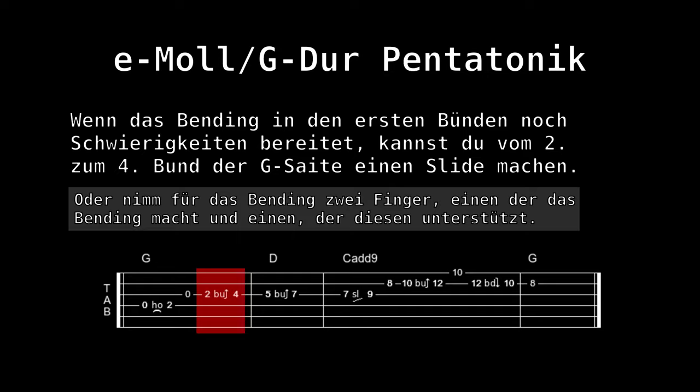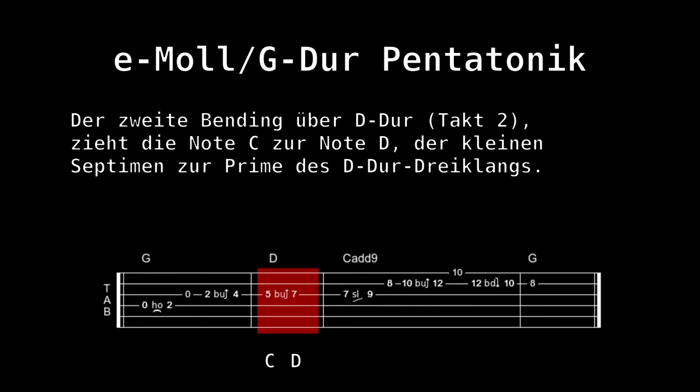Wenn das Bending noch Schwierigkeiten bereitet, kann der Tonschritt vom zweiten zum vierten Bund mit einem Slide gemacht werden. Der zweite Bending über den D-Dur Dreiklang im Takt 2 zieht die Note C zur Note D, dem Grundton des D-Dur Dreiklangs.